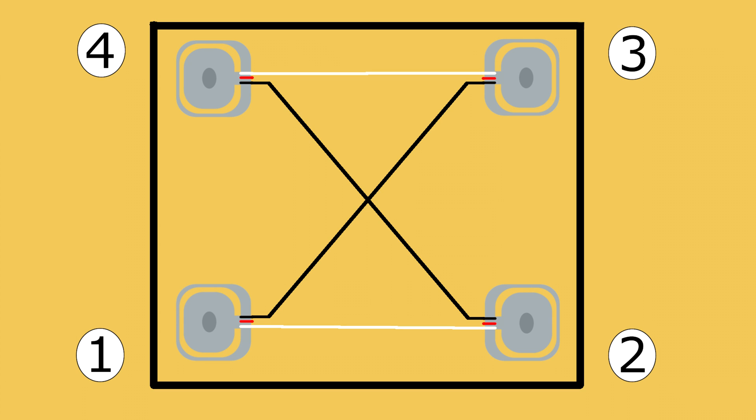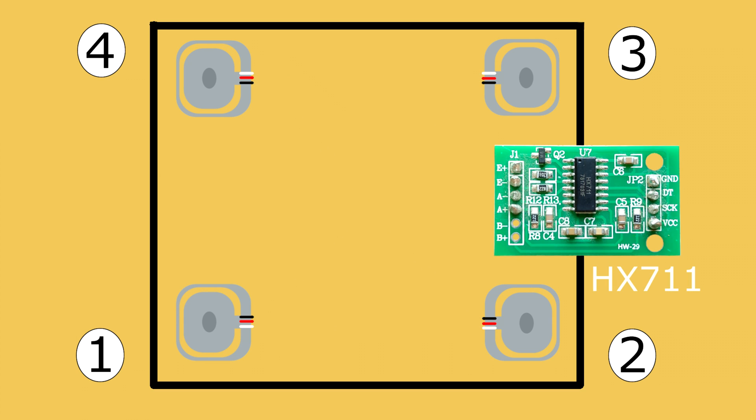Finally, the remaining wires, in my case the red ones, will go to the HX711 module in the following way. Sensor 4 to E+, Sensor 1 to E-, Sensor 2 to A-, and Sensor 3 to A+. We won't be using the remaining two pins in the module.